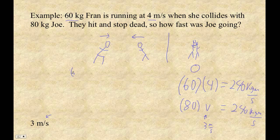60 times. I'm going to make positive this way. So her velocity was positive 4. And his velocity is negative 3 because he's going this way. So this momentum is positive 240, and then this momentum is negative 240. Afterwards, the momentum is 0.